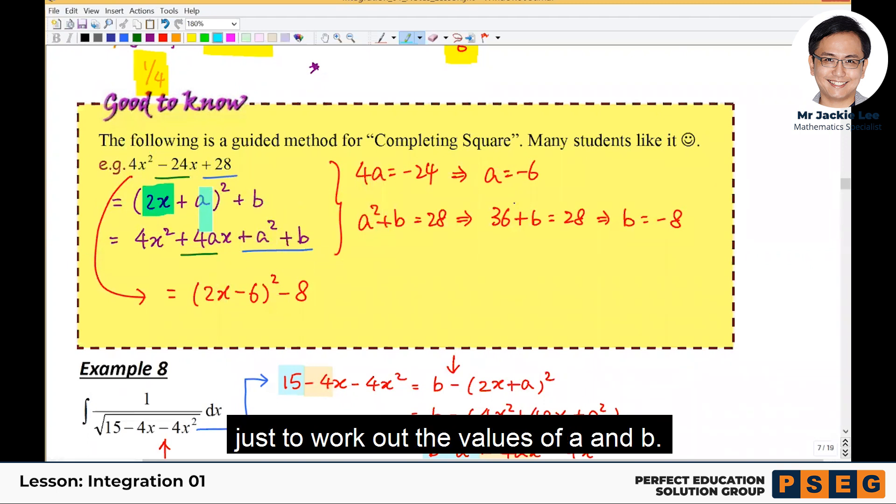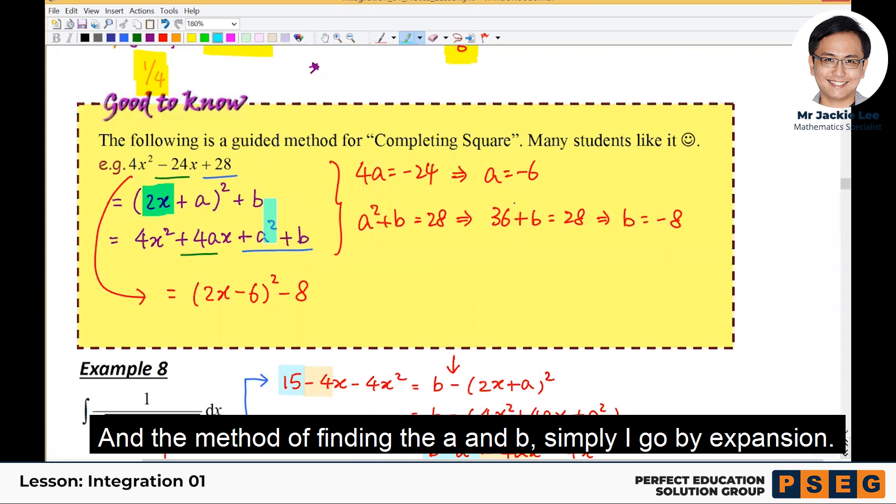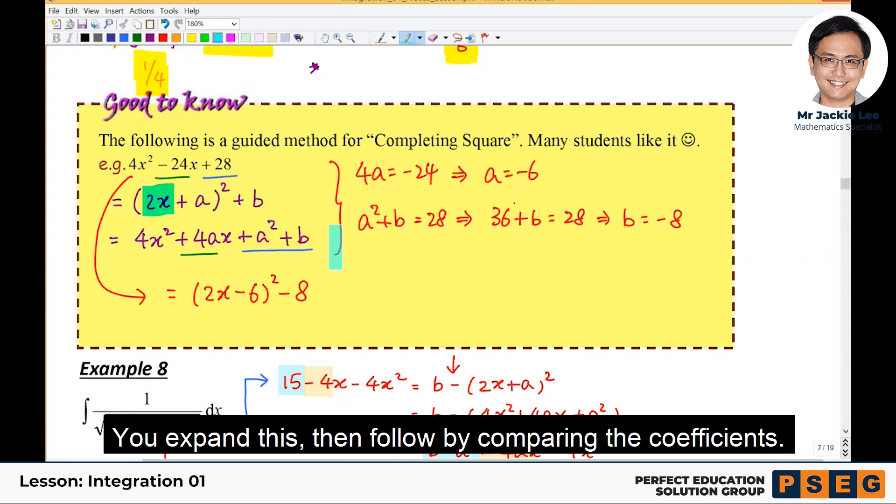Then I'll draw it very clear just to work out for a and b. And the method to actually find the a and b, simply I go by expansion. You expand this, then followed by compare the coefficient.